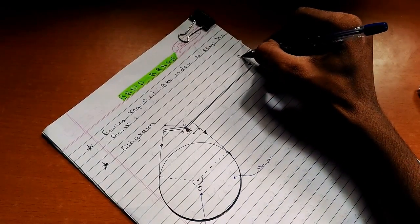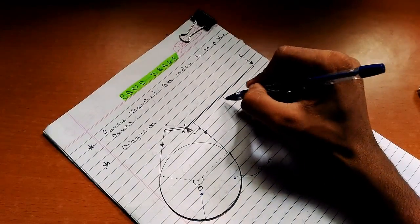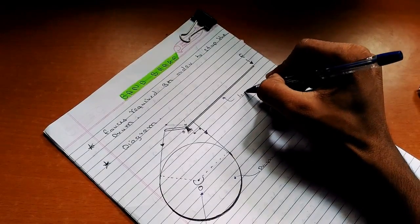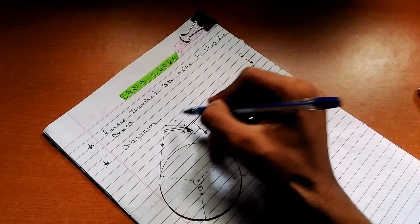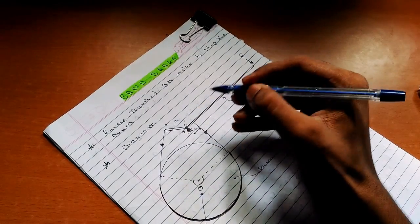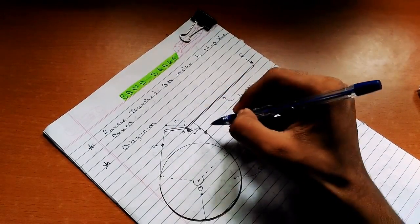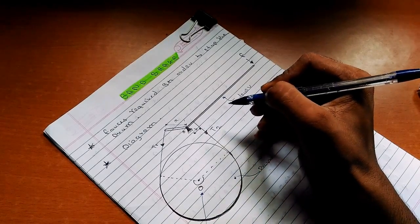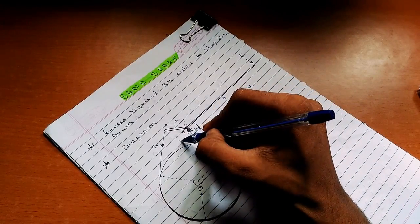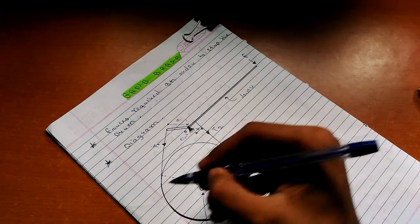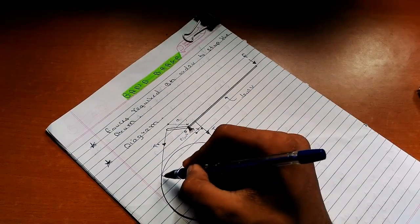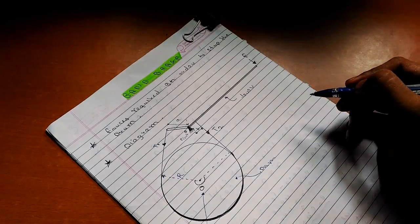Here the force applied on lever at length A and B. Here tension in the spring T1 and T2. Here this is the pivot point O, and this is the radius of the drum R.